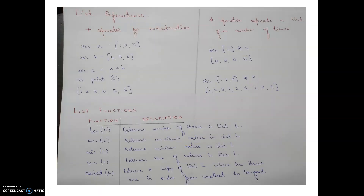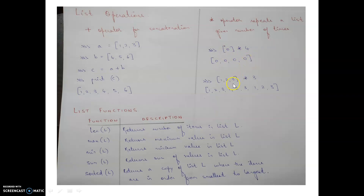List operations include the plus operator for concatenation and the asterisk for repetition. For concatenation, you have two lists c and b — both sides of the plus operator must be of the same data type. The result places them side by side. For the asterisk operator, whatever list you have is repeated the specified number of times — for example, a list with a single zero repeated four times, or a list of three elements repeated three times.